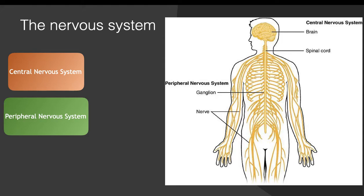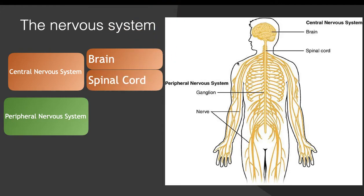The central nervous system is made up of the brain and the spinal cord. The spinal cord is like this long nerve over here that originates at the brain and goes down to the bottom of the body.